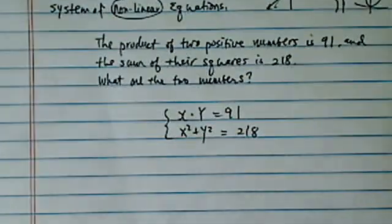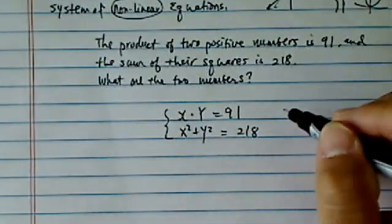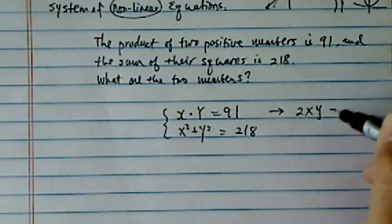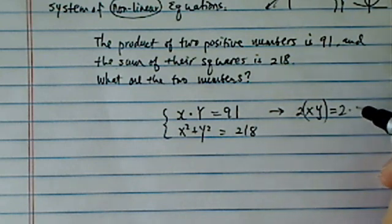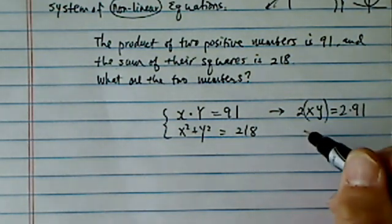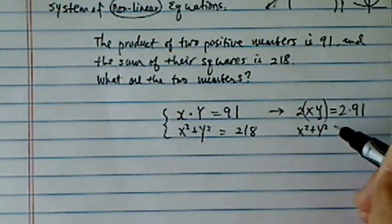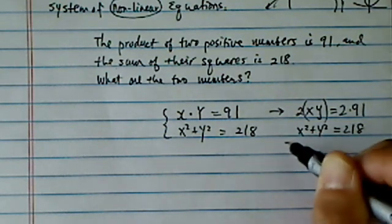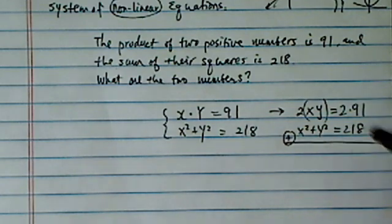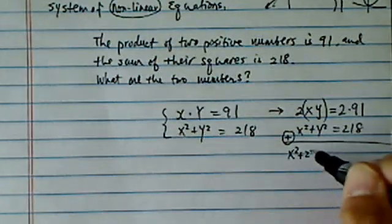Now this one is kind of what I call a cute equation, because you realize 2 times x times y is equal to 2 times 91, and you have x squared plus y squared equal to 218. Now if you add those equations after modifying a little bit,